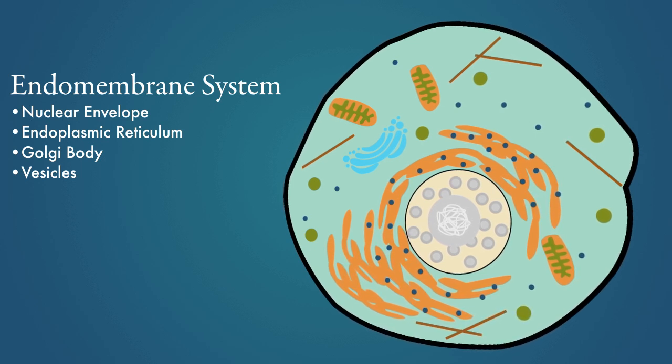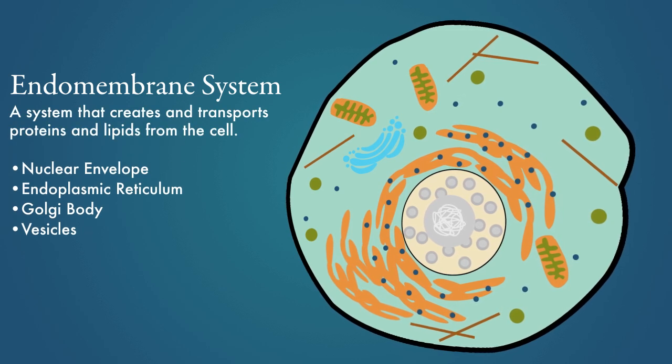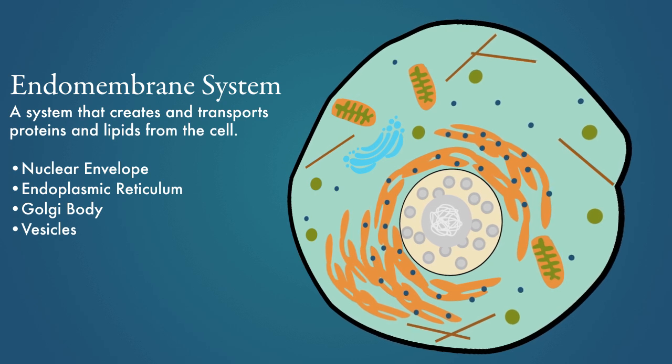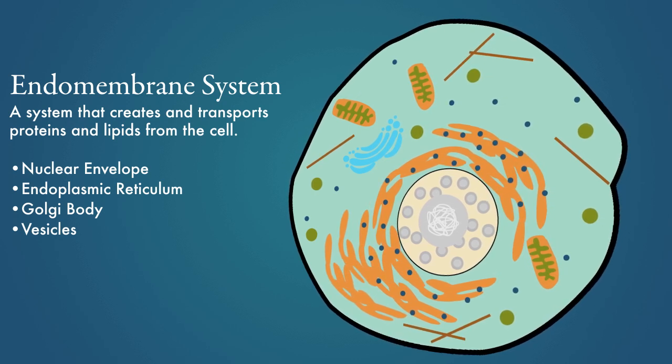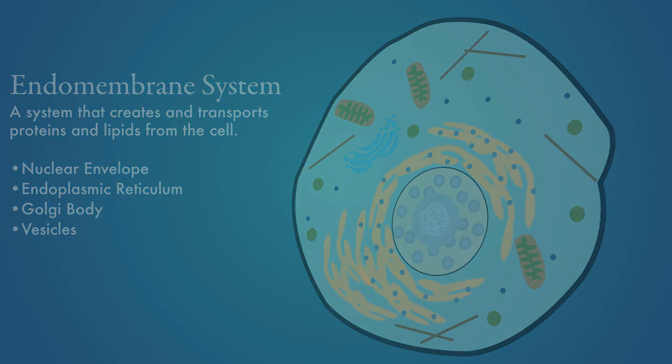Each of these organelles is important to the creation and transport of proteins and lipids. The endomembrane system assembles proteins, modifies them, and encloses them in a plasma membrane to be used inside the cell or transported outside of the cell.